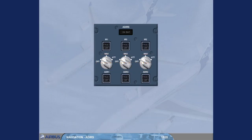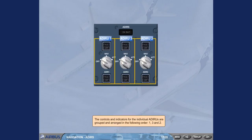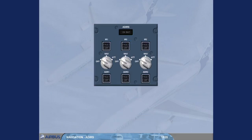The controls and indicators for the individual ADRs are grouped and arranged in the following order. Each ADR has an associated IR rotary mode selector. In the off position, the ADR is not energized, so ADR and IR data is not available. The three ADR and three IR switches normally remain on, but they can be selected off in response to ECAM procedures.